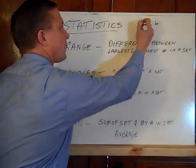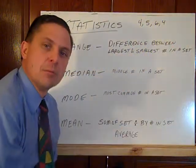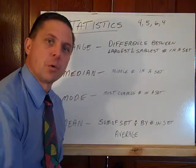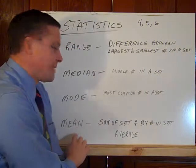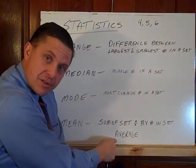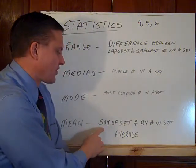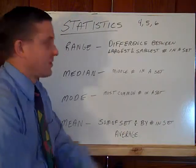If I had a fourth number here, another four, the mode would be four because four occurred twice. Lastly, we have the mean, or the average. It's the sum of the set divided by the number in the set.